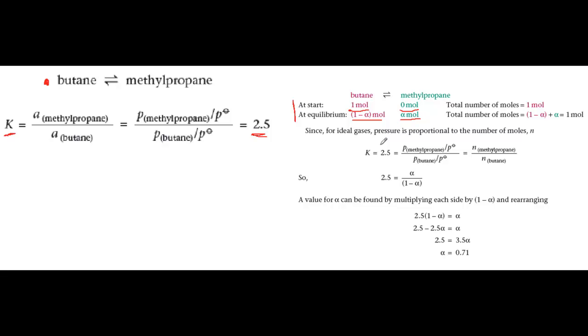So now we have values in terms of alpha for the amounts of reactants and products at equilibrium. Now we can put these values into the expression for K. K is in terms of partial pressures but for an ideal gas, partial pressure is proportional to the number of moles. So we can put in number of moles instead of partial pressures.